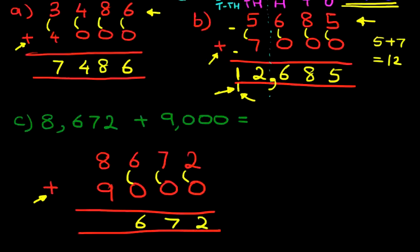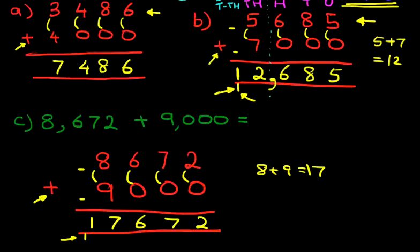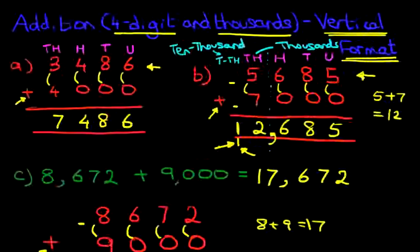Six hundred and seventy-two. Now for the thousands: we've got eight plus nine. Eight plus nine is seventeen — one here and seven here. For the ten thousands, there's zero here and zero here, but there is one carried over, so we write that in. The question eight thousand, six hundred and seventy-two plus nine thousand equals seventeen thousand, six hundred and seventy-two. The hundreds, tens, and units do not change — it's just the thousands that change.